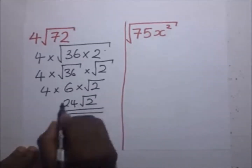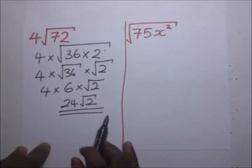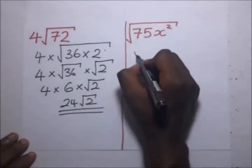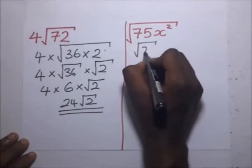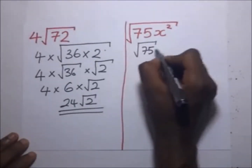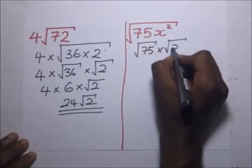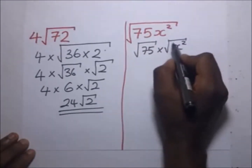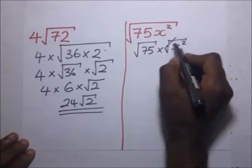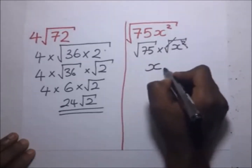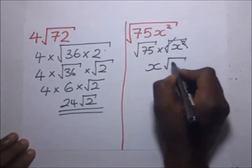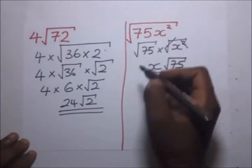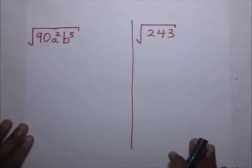24√2 is the simplified form of that surd. For the next example, the square root of 75x² becomes the square root of 75 times the square root of x². The square root of x² is x, so we remain with x times the square root of 75. That is the simplification of that surd.